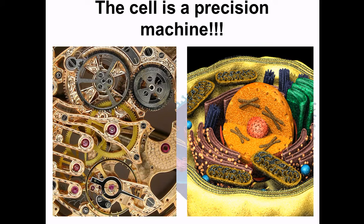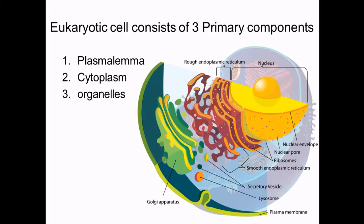The cell itself is a precision machine. Every organelle has a purpose and a function, and it all has to be working in perfect timing for everything to work right — just like gears. If one gear is out of place, nothing works. If the mitochondria is not working, nothing else is going to work properly. Here are the major parts of the cell: the plasma membrane on the outside, the organelles as little structures floating inside, and the cytoplasm as the liquid inside the cell.